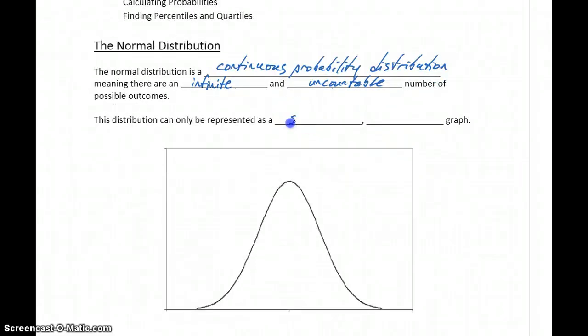Because of that, this distribution can only be represented as a symmetric unimodal graph, or curve.